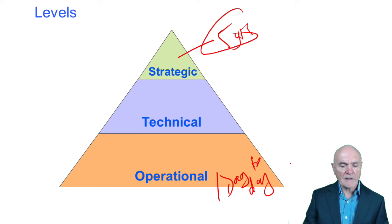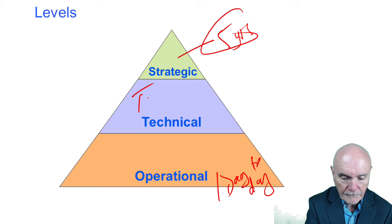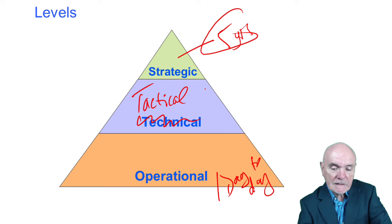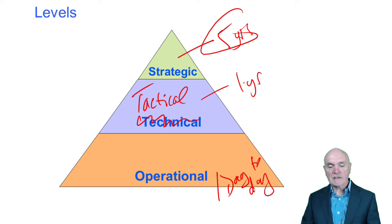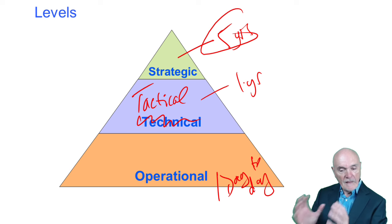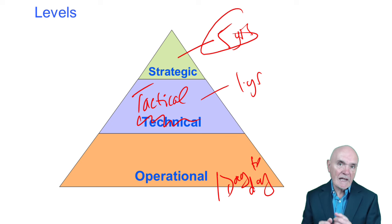And then we have, I shouldn't say technical, we should actually say tactical. Tactical level. Think of this as about one year. So strategy and tactics, strategy is long term, tactics is shorter. Think of this as a manager who is concerned with making their budget. And usually the budget will be the year's results and so on. They are concerned with controlling the costs and the sales and so on within a relatively short period. But they are not going to be making big changes. That's for the strategic level.